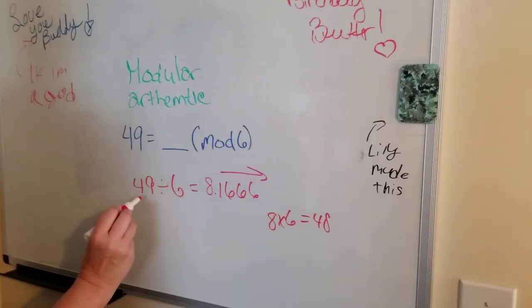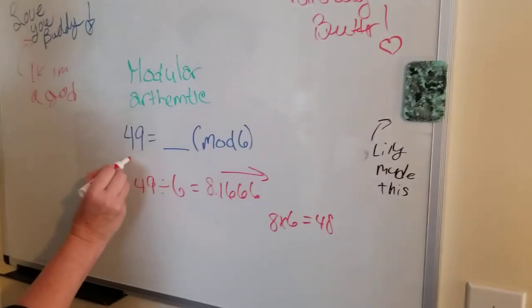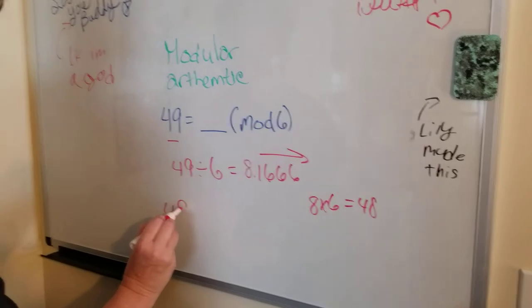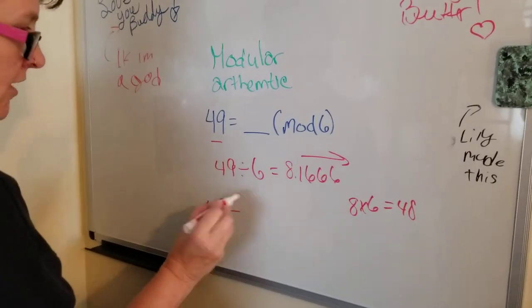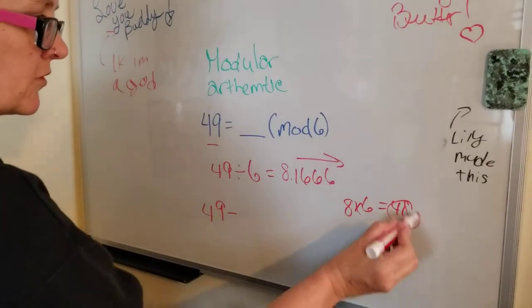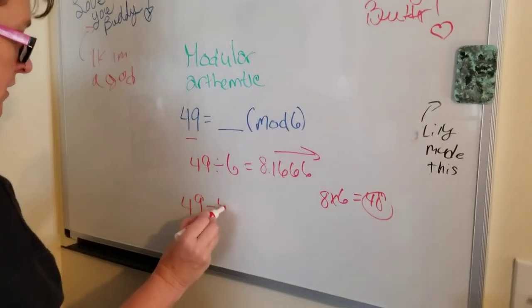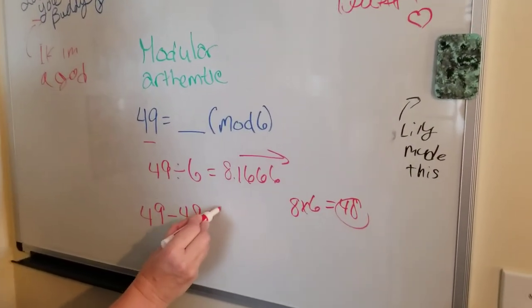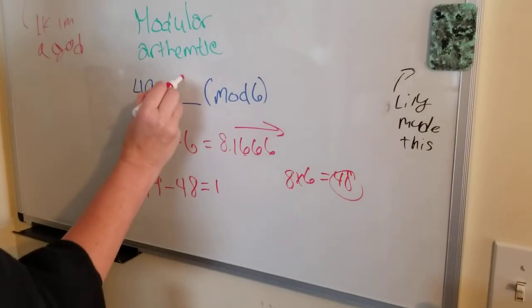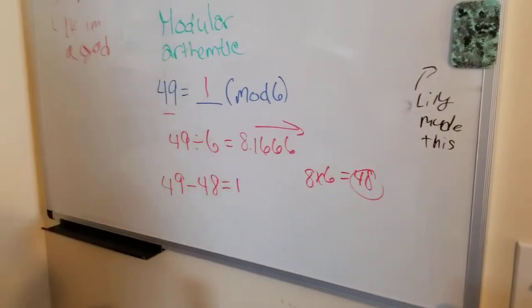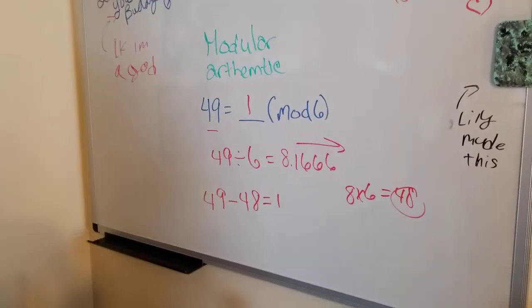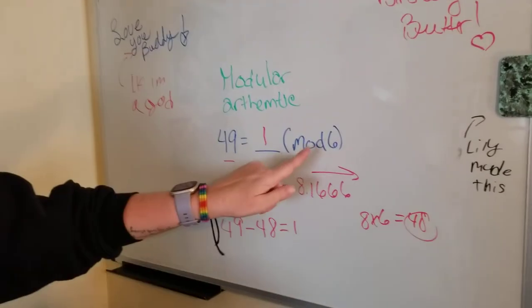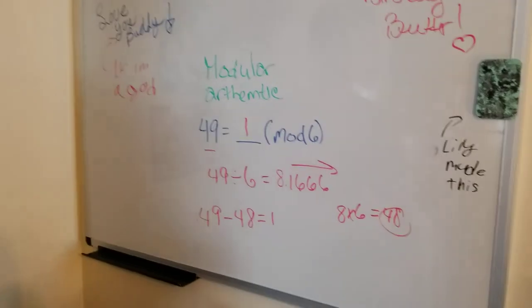Then you would take the original number minus the number you got here, equaling 1. So your answer to 49 mod 6 is 1.